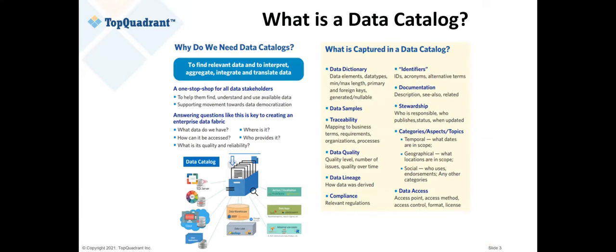We went from metadata to data catalogs — but what is a data catalog? Your metadata catalog or data catalog in general is all of those metadata statements brought together to serve a purpose. That purpose serves the data stakeholders as a one-stop shop. It's important that all of these facts are not just in one place or centralized — it's that they're understood, and most importantly, connected.